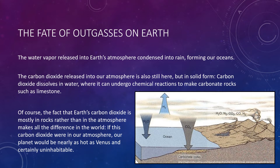Earth has about 170,000 times as much carbon dioxide locked up in rocks than it does in its atmosphere, which means that Earth does indeed have almost as much total carbon dioxide as Venus does. The fact that Earth's carbon dioxide is mostly in rocks rather than the atmosphere makes all the difference in the world. If this carbon dioxide were to somehow enter our atmosphere, our planet would be nearly as hot as Venus and would certainly be uninhabitable. Forming oceans allowed us to take a lot of that carbon dioxide out of the air, reducing the greenhouse effect.